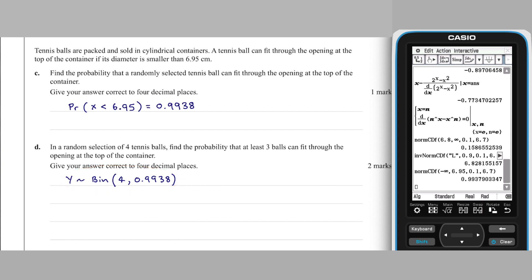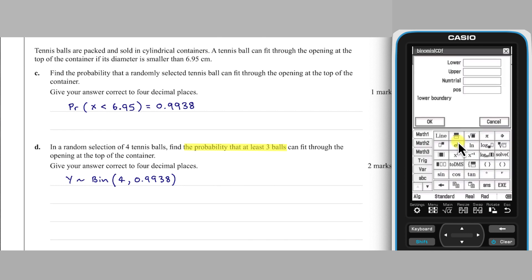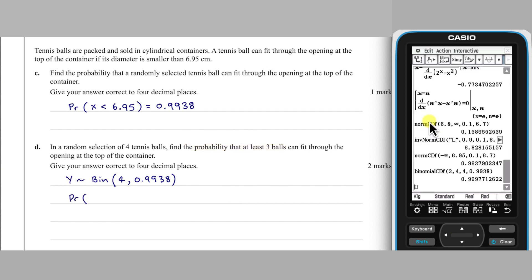With that done, we can calculate the probability that Y is greater than or equal to 3 using interactive, distribution, discrete, binomial CDF. The lower and upper are 3 and 4, N equals 4, and the probability of success is 0.9938. This gives us an answer of 0.9998 to four decimal places.